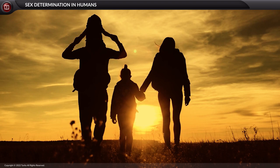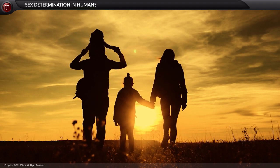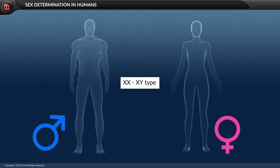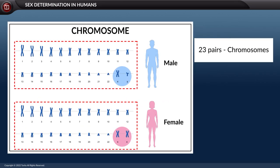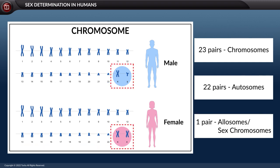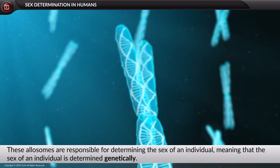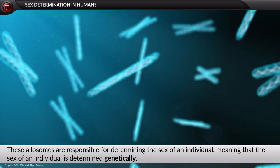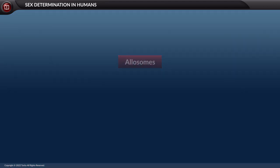Let us discuss sex determination in humans. In humans, sex determination is XX XY type. Every cell accommodates 46 chromosomes arranged in 23 pairs. Of these 23 pairs, 22 pairs are called autosomes and one pair is called allosomes or sex chromosomes. These allosomes are responsible for determining the sex of an individual, meaning the sex is determined genetically. The allosomes in humans are of two types: X and Y.